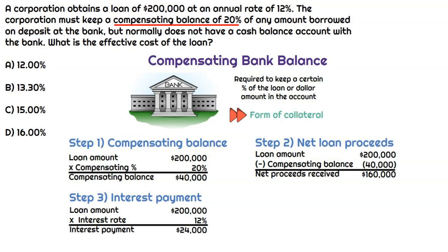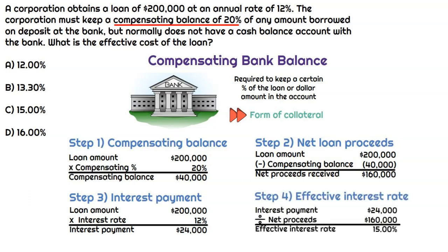That is a little unfair, but let's see what the actual effective interest rate or cost of the loan is. If our interest payment is $24,000 and we're actually only getting net proceeds of $160,000, that means the effective interest rate is 15% and not 12%. That is how a compensating bank balance can impact the ultimate effective cost of the loan. So be on the lookout for this on the exam — understand what a compensating bank balance is and why there is a difference between the stated rate and the effective cost of the loan. The correct answer is 15%.